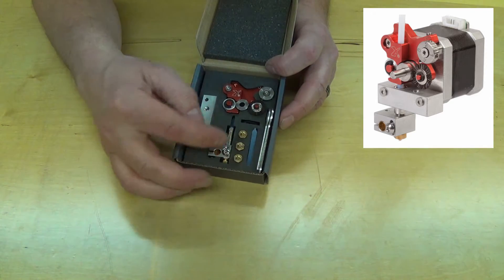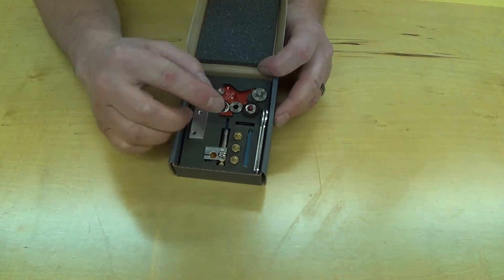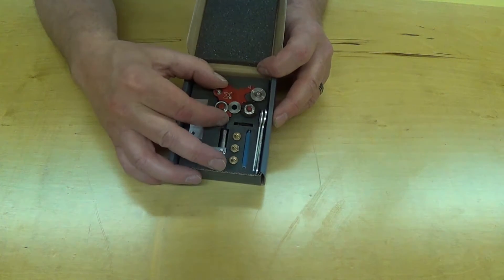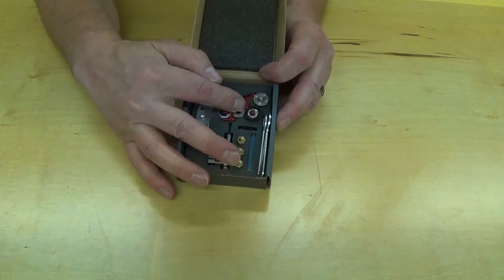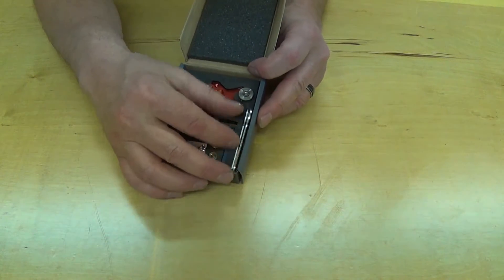Some extra PTFE tubing, the actual extruder part that goes on to the motor, a cam, and a couple wrenches.